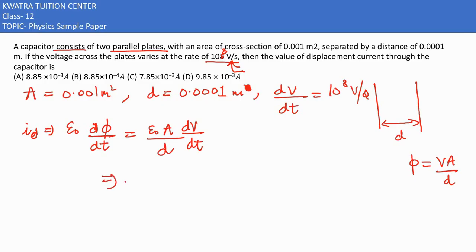Now we need to put all the values. Epsilon naught ki value is 8.85 into 10 to the power minus 12. Area is 0.001, and then we have the distance as well, 0.001. And then you have dv by dt, which is 10 to the power 8. Small d ki value we've already written. Now we need to simplify this.